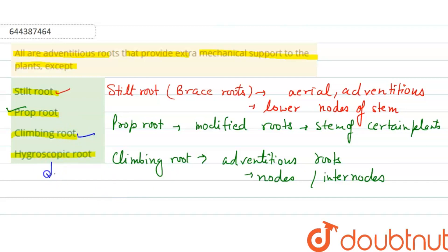And the last option, that is hygroscopic roots, or we can say the epiphytic roots. So with the help of velamen, the epiphytic roots are able to absorb water from the moist environment. So all the adventitious roots which provide extra mechanical support to the plant except the hygroscopic roots.